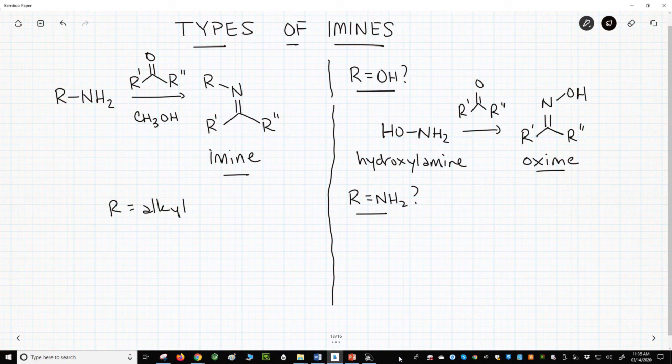If the R group is an NH2, the amine has a name. This is hydrazine. Hydrazine is used in some types of rocket fuel.